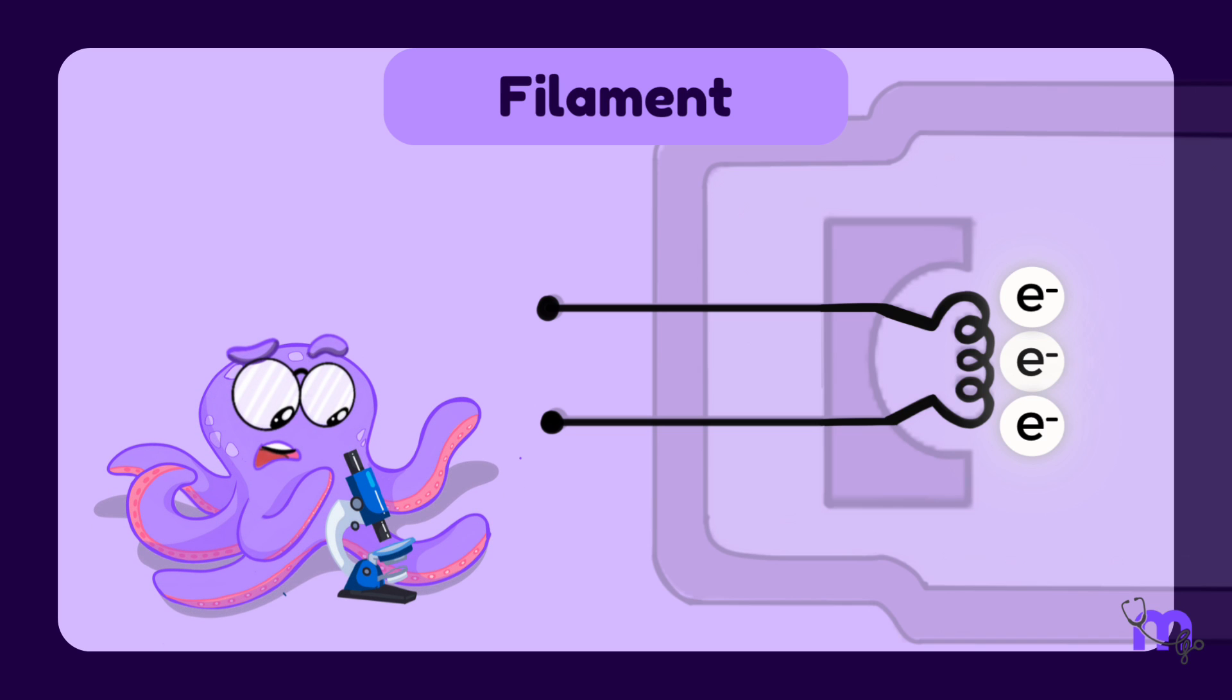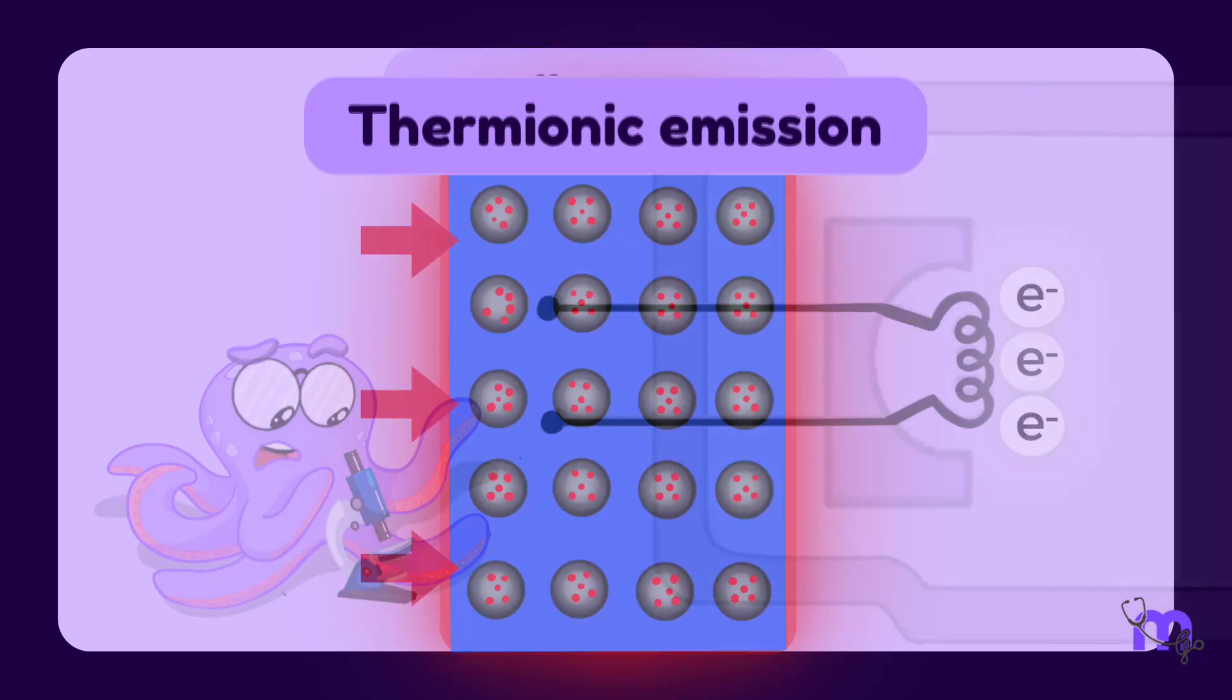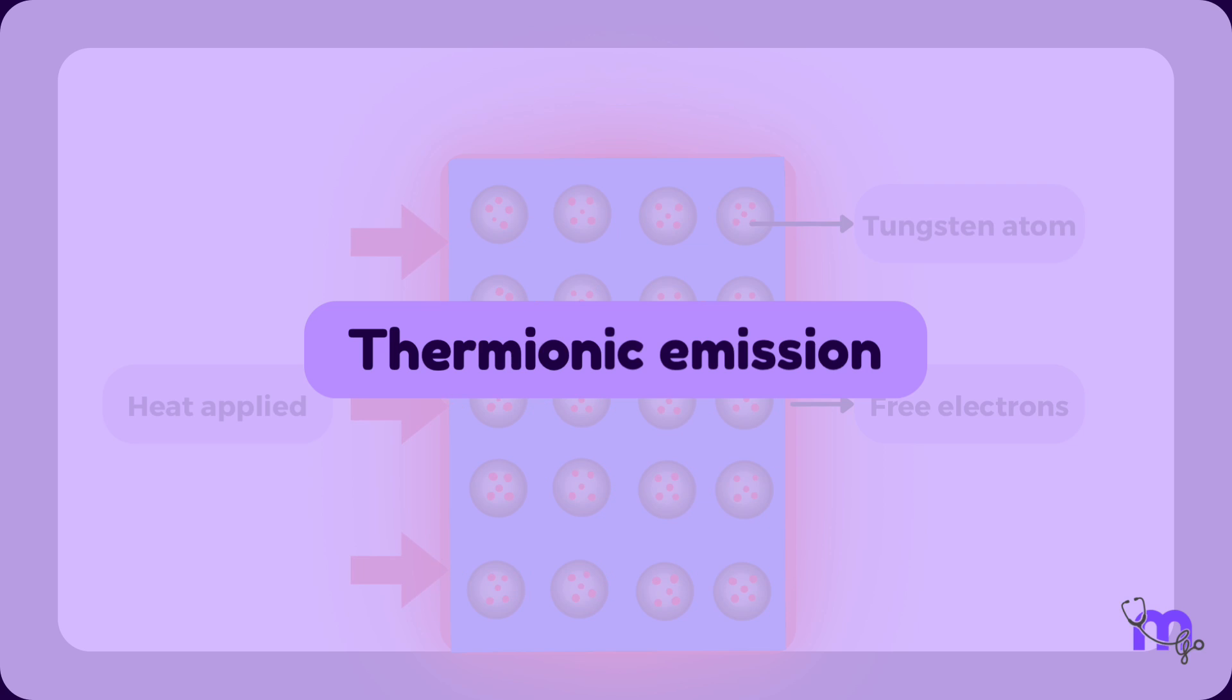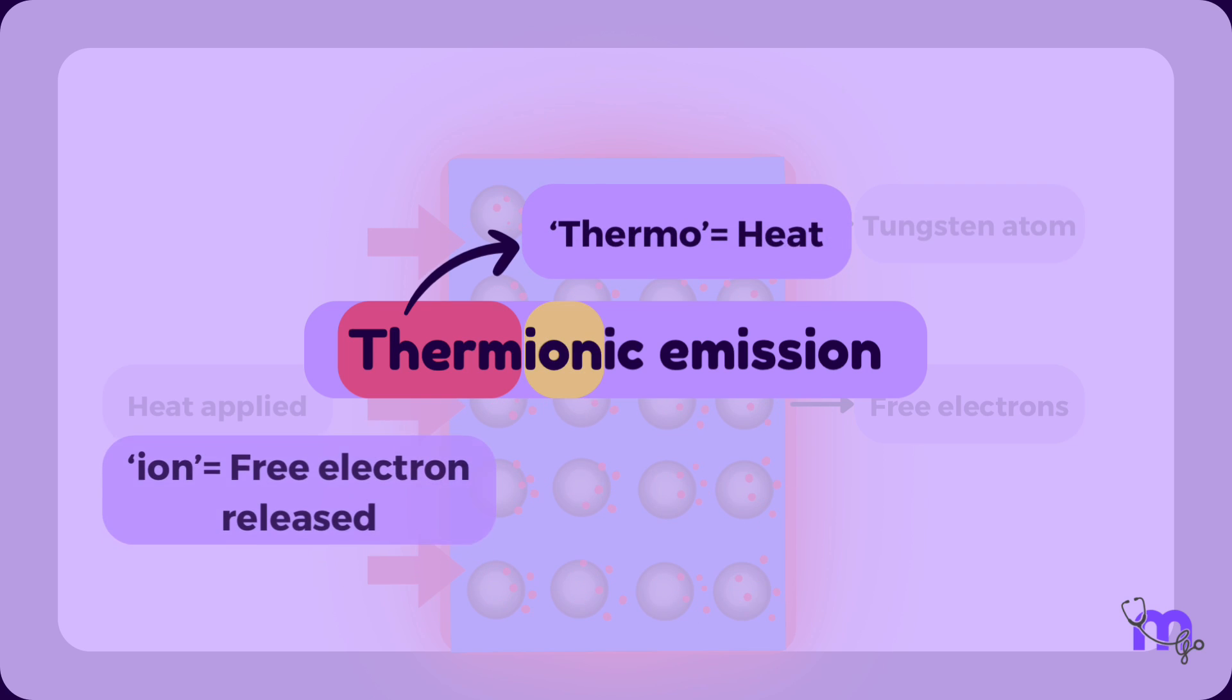In order to understand how these electrons are created, we would need to examine the filament at a microscopic level. Here we will see a process called thermionic emission taking place. It involves electrons from the heated tungsten atoms being pushed out of their shells and released as free ions once they gain sufficient energy higher than their own binding energy. Thus the word thermionic, where thermo means heat and ion refers to the free electron released.